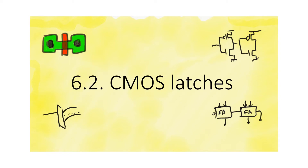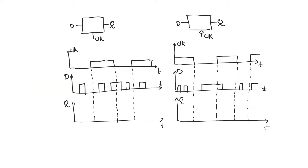The simplest kind of storage element is the latch. The latch is a storage element which is transparent with respect to the clock. There are two types of latches: active high latches and active low latches. The latch has two modes: transparent mode and opaque mode.